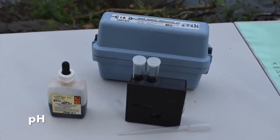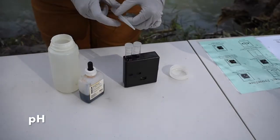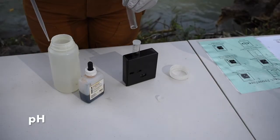Here are all of the materials you will need to do this test. The first step is to fill each of the two tubes with 5 ml of sample water from the river.